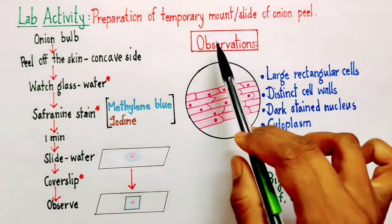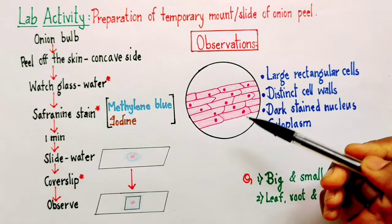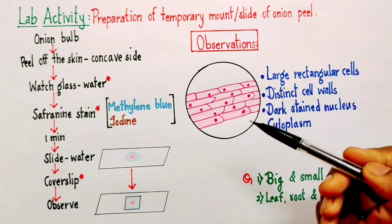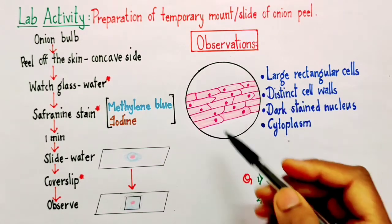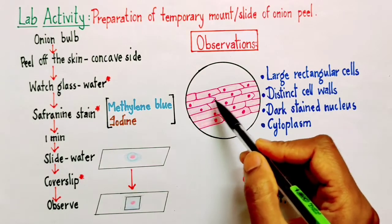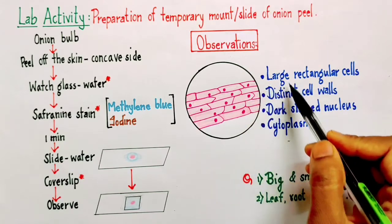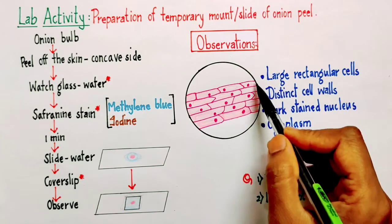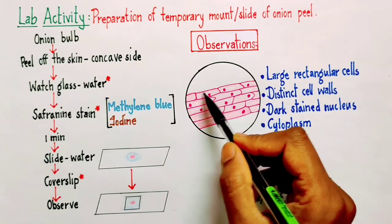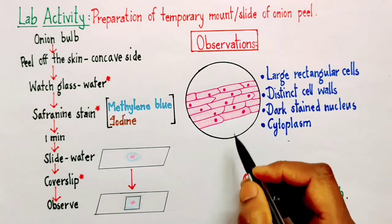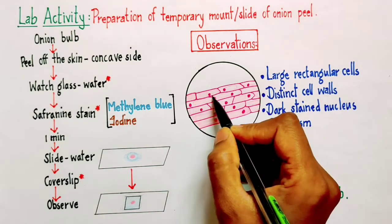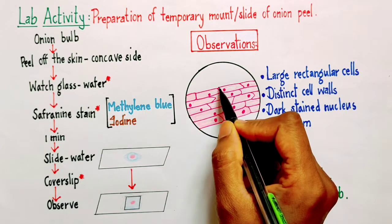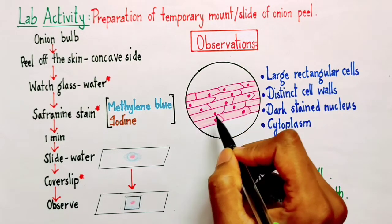You can observe it using the light microscope or student's microscope available in your laboratory. When we are going to observe it, we are going to notice long rectangular shaped cells. These are the onion cells which are present in the bulb of the onion.